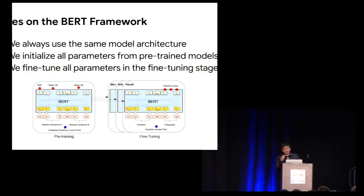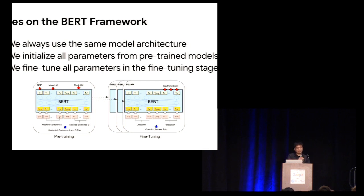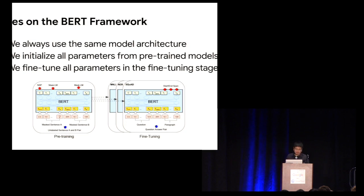Some notes about the BERT framework: first, we always use the same model architecture for all tasks, including pre-training and all fine-tuning tasks — the only difference is in the output layers. Second, we initialize all parameters from the pre-trained model, not just some but all parameters in the transformer layers. Third, we fine-tune all parameters in the fine-tuning stage — even if you only have several thousand labeled examples, we still fine-tune all millions of parameters of the BERT model.